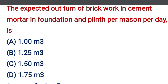The expected outturn for brickwork in cement mortar in foundation and plinth per mason per day is — option A: 1 m³, option B: 1.25 m³, option C: 1.5 m³, option D: 1.75 m³. The correct answer is option B, 1.25 m³.